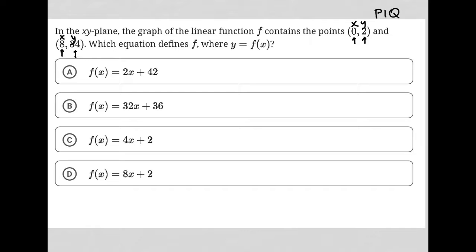The fact that when I plug 0 in for x, I should get y equals 2 automatically means A and B are gone because, in these cases, if I put 0 here, I get 42. If I put 0 here, I get 36. But I don't want those numbers. I want 2. But I do get 2 for C and D.